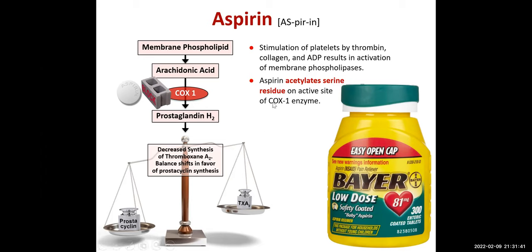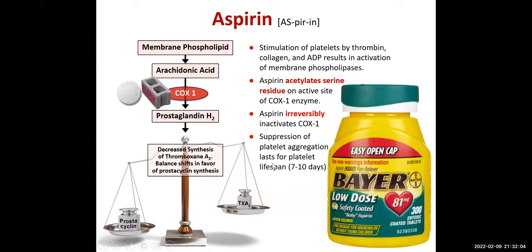Aspirin acetylates a serine residue on the active site of COX-1 enzyme and inhibits it covalently — whenever something binds covalently, it is permanent and irreversible. Aspirin irreversibly inactivates COX-1, unlike other NSAIDs, and suppression of platelet aggregation lasts for the lifespan of the platelet, which is 7 to 10 days. The dose is 75 to 325 mg. Anywhere between 75 to 162 mg is said to be the standard antiplatelet dose.